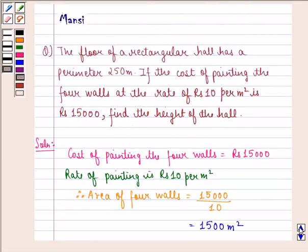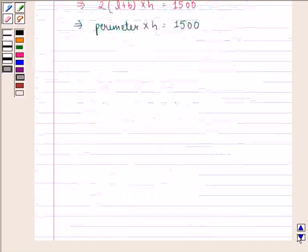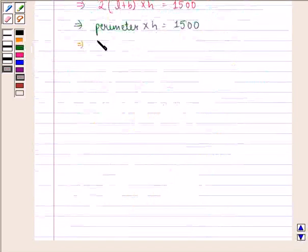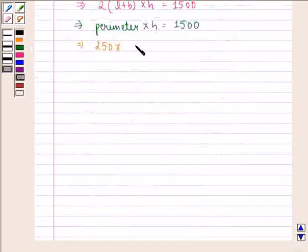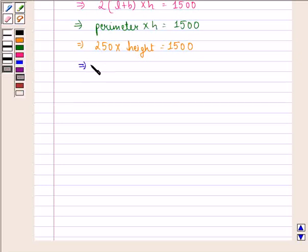Now it is given to us in the question that perimeter is 250 meter. So we can say that 250 into height is equal to 1500, and this implies that height is equal to 1500 divided by 250.